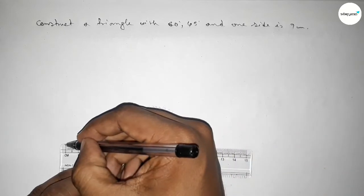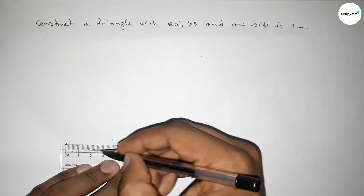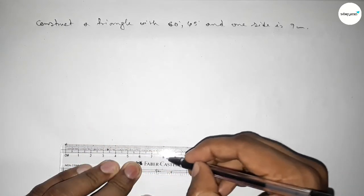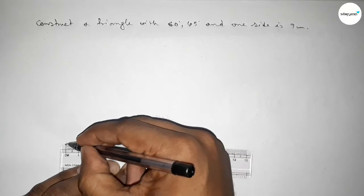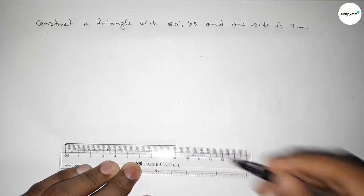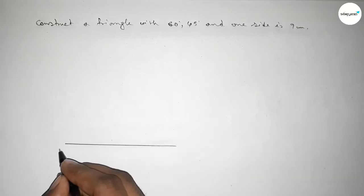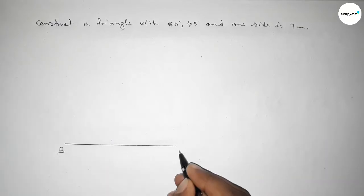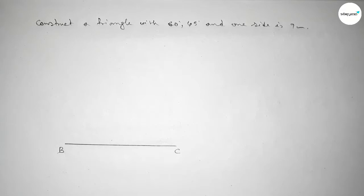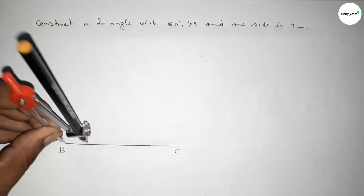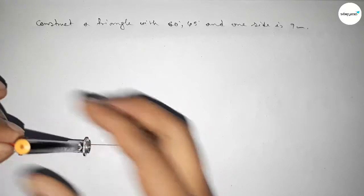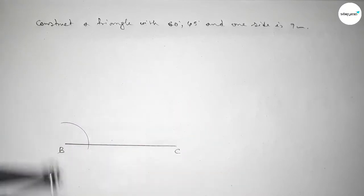First of all, we have to draw a line of length 9 centimeters. This is the 9 centimeter line, taking point B here and point C here. Now drawing a 60 degree angle at point B, so putting the compass here and drawing an arc.